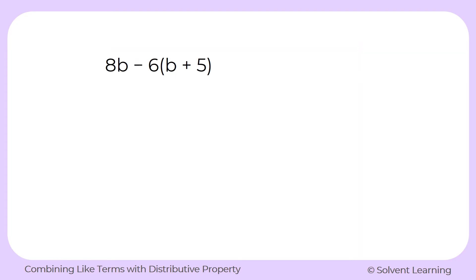Here's another example. This time we have 8b and then minus 6 times b plus 5 in parentheses. Just like before, we can't start by simplifying what's inside the parentheses because b plus 5 can't be simplified any more than it is — we can't add those together. So we're going to have to rely on our distributive property and combining like terms to help us simplify it.